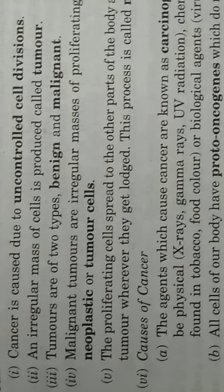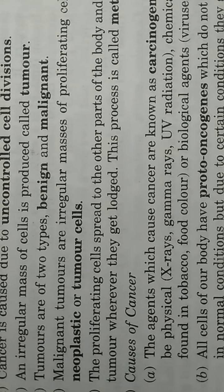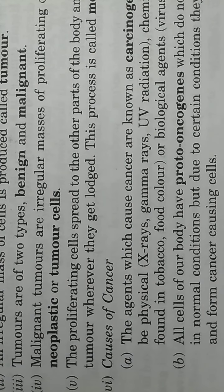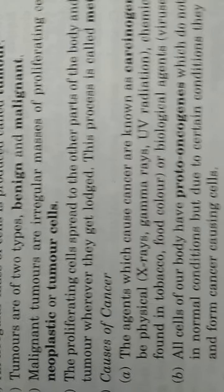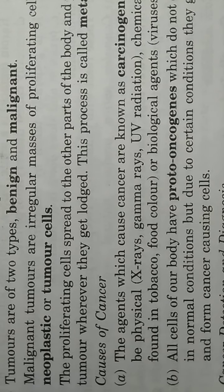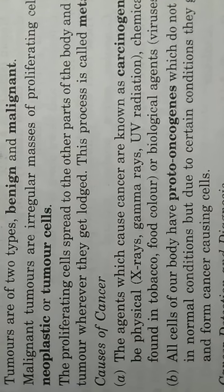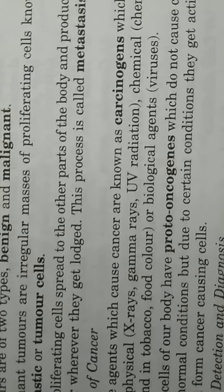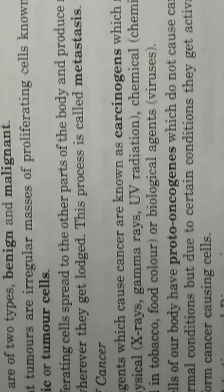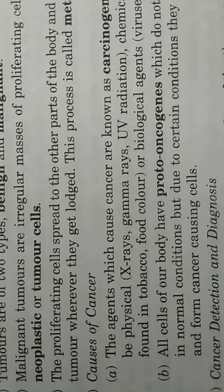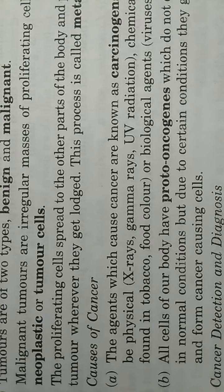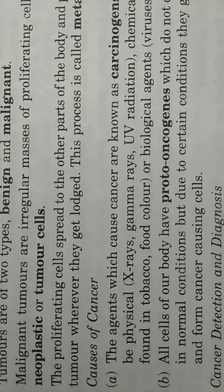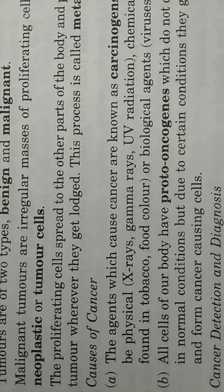Malignant tumors are irregular masses of proliferating cells known as neoplastic or tumor cells. जो malignant tumors हैं, यह actually irregular mass होते हैं, किसी भी proper shape के बिना, जो की proliferating cells के बने होते हैं। इन cells को हम tumor cells या neoplastic cells कहते हैं।